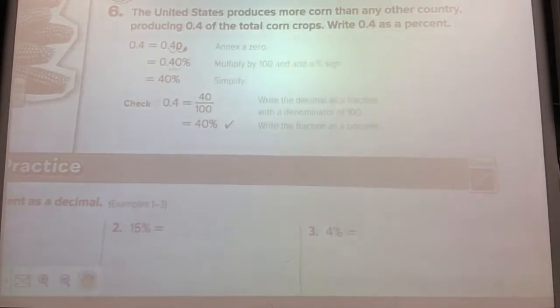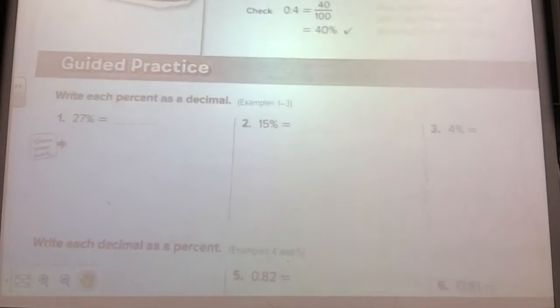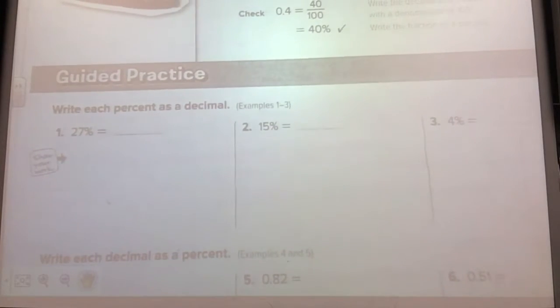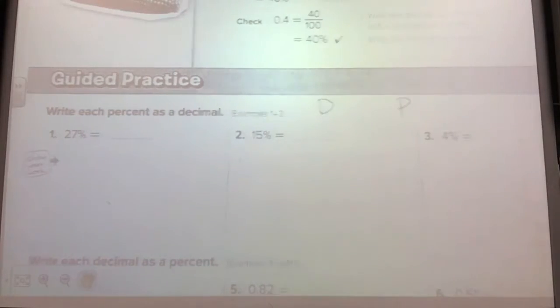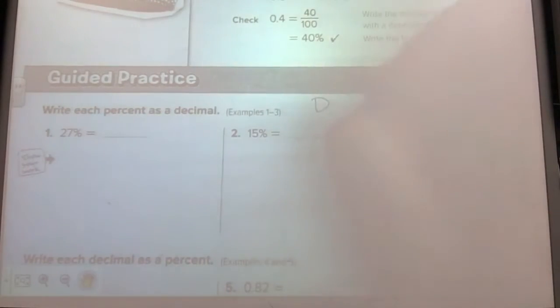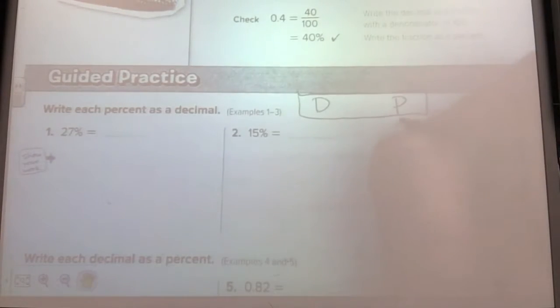Alright, we are going to go on to the guided practice. All we're going to be doing is moving these decimals, so this should be a nice easy lesson for you. Again, at the top here I would write D and P so you remember D before P. That's your key. I have a percent here, that means I go to the left two places.